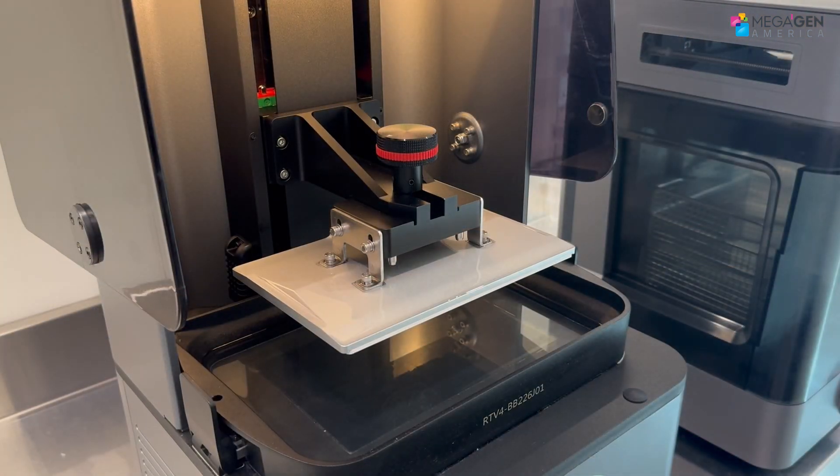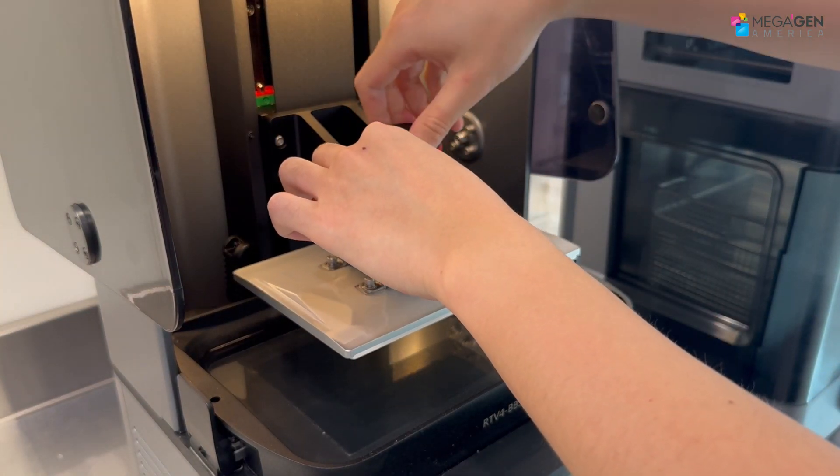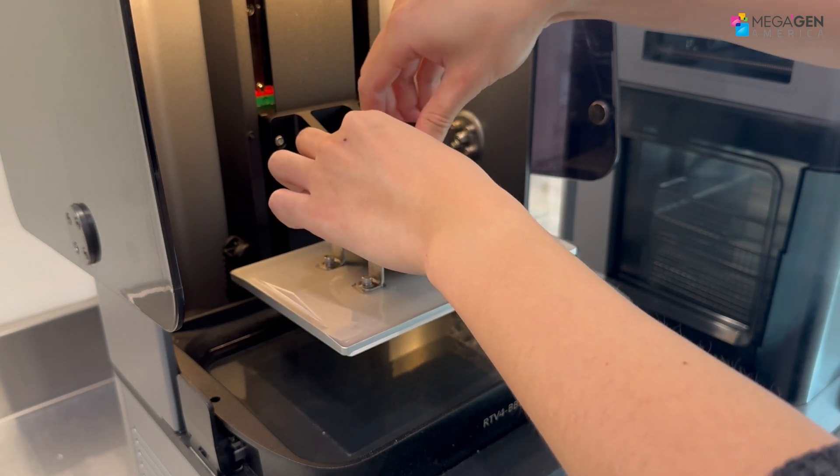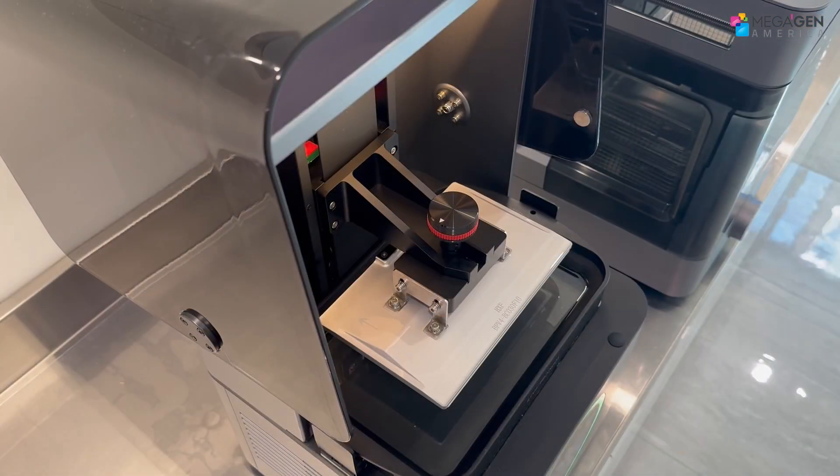Now that the guide is printed, carefully wipe the resin off the platform and transfer it to the washer. Do not allow resin to spill as it can damage the printer.